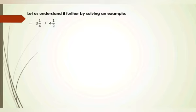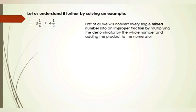Let's look at our example. We have two mixed numbers: the first is 3 and 1/4, and the other is 4 and 1/2. We have two mixed numbers, each with a whole number and a proper fraction. First of all, we convert every mixed number into an improper fraction by multiplying the denominator by the whole number and adding the product to the numerator.